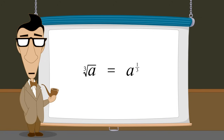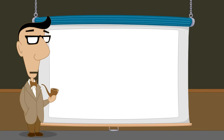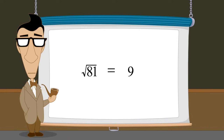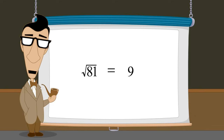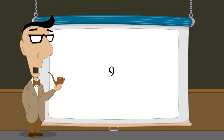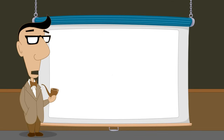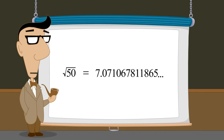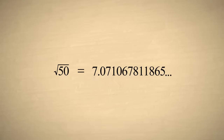We have seen that roots can sometimes be integers. For instance, the square root of 81 is 9. It is obviously simpler to write the integer 9 than to write the square root of 81. However, most roots are irrational numbers. In this case, writing the root as a radical expression is probably simpler than writing a long sequence of digits.